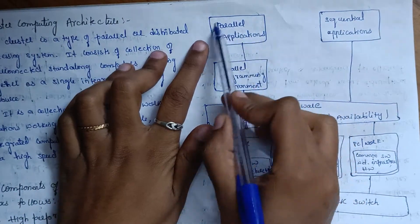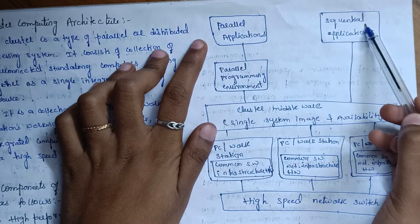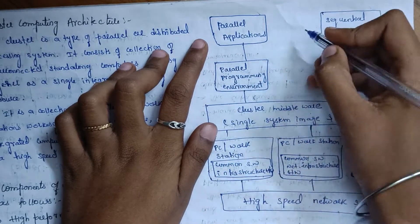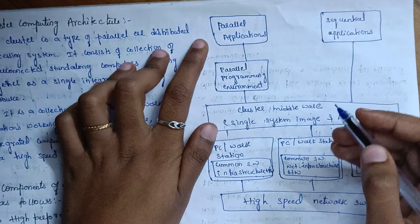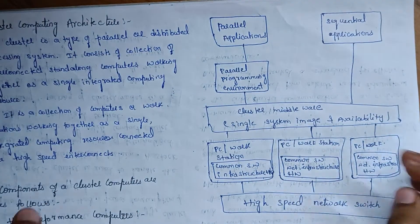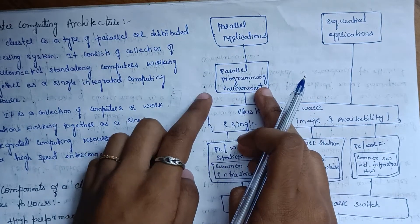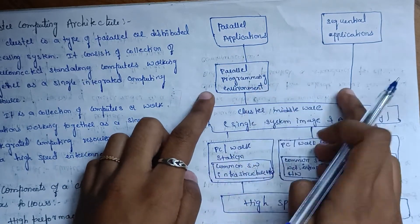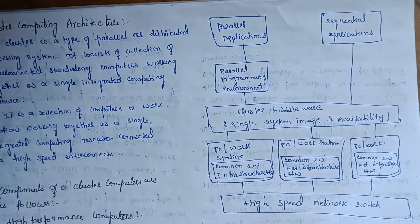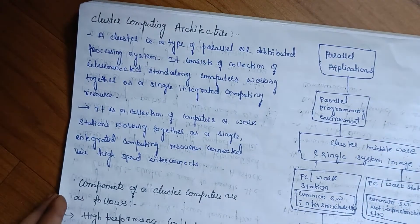In the architecture we have parallel applications and parallel programming. There is also a sequential application layer. Parallel means tasks run simultaneously, one by one at the same time. Sequential runs them one at a time. We have a parallel programming environment, and we will use high-speed networks.